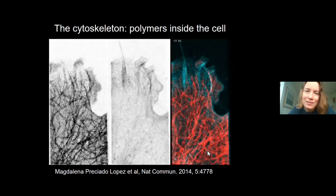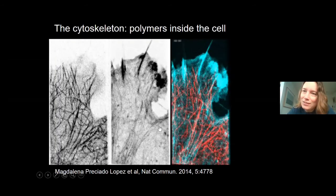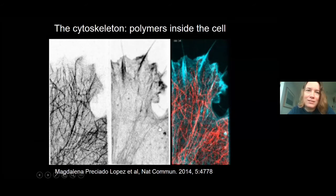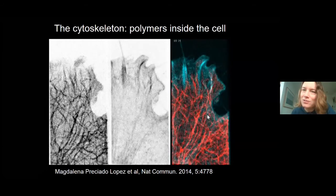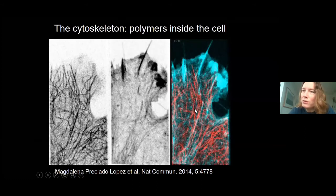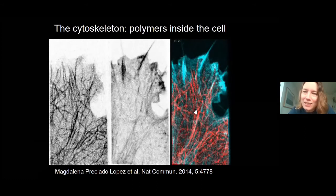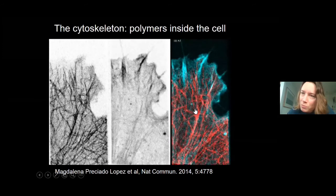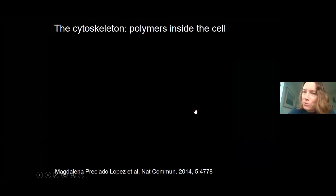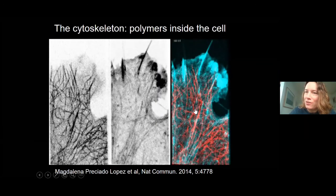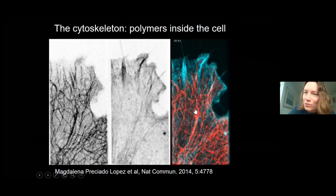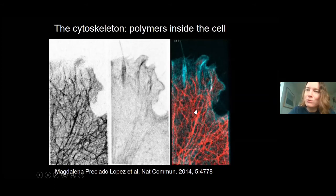The cytoskeleton is a framework of polymers inside the cell that becomes visible when you fluorescently stain these proteins. In blue you see the actin cytoskeleton and in red you see microtubules. These proteins form filaments that constitute the structural framework of the cell, but they are also very dynamic — it's not just a scaffold but something in constant motion and constant turnover.